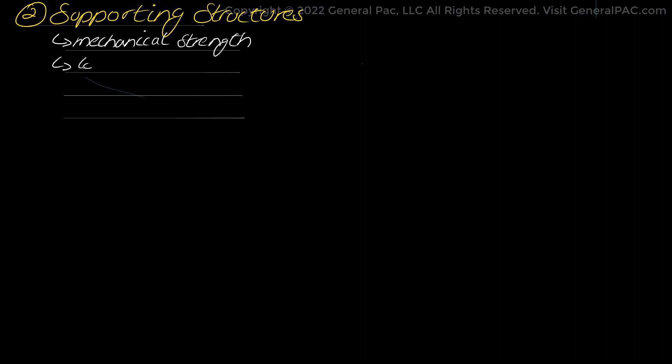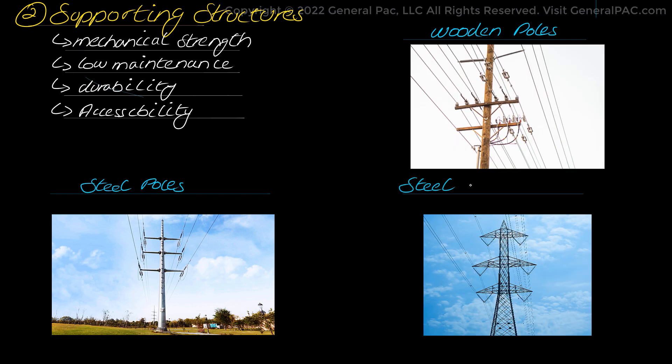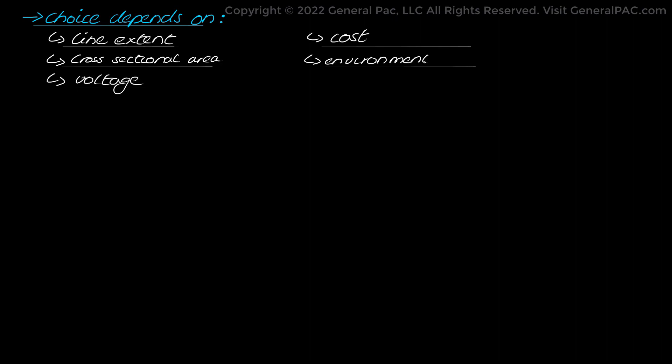The supporting structure — poles or towers — that support and carry the transmission lines should have high mechanical strength to endure the weight of the conductors, low maintenance costs, high durability, stability, and accessibility to conductors. The most common types of line supporters are steel poles, wooden poles, RCC poles, and steel lattice towers. The choice of supporting structure depends upon the line extent, cross sectional areas, voltage, cost, local environmental conditions, and so forth.